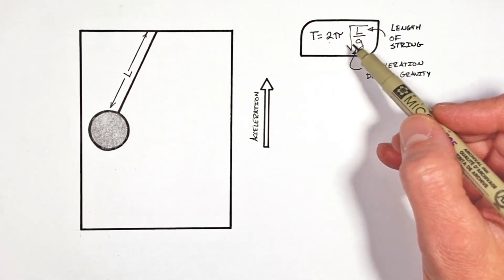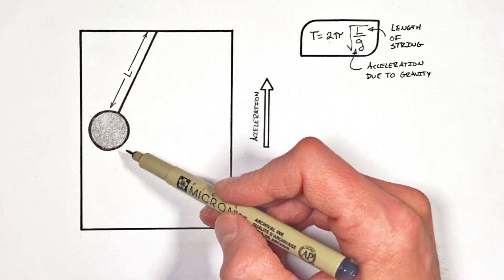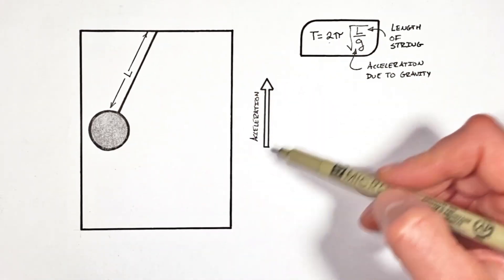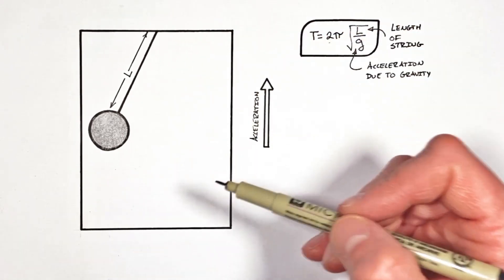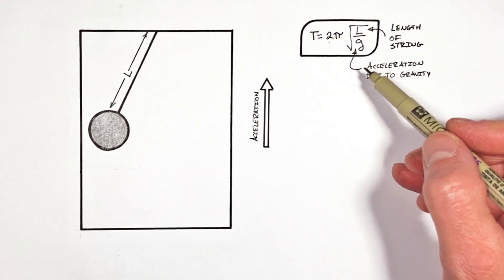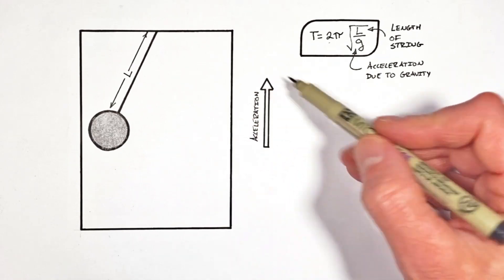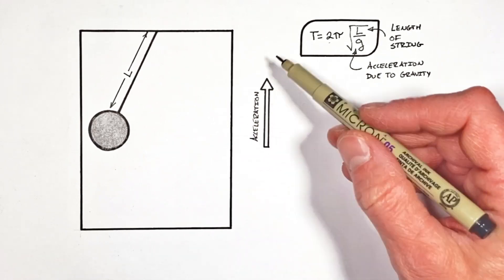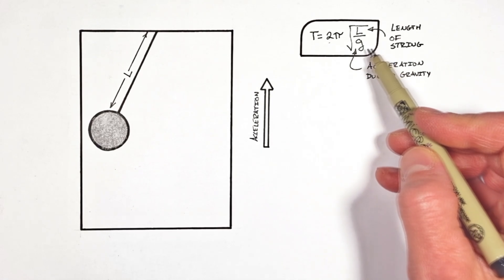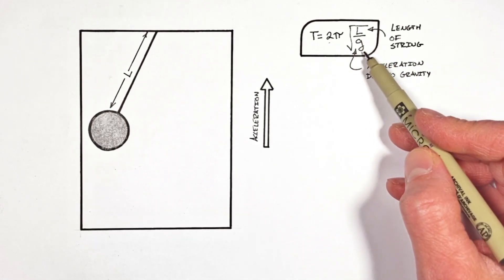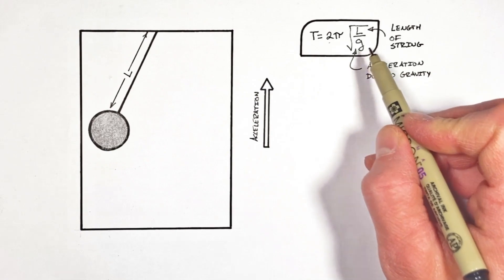Now realize, this period equation applies to our pendulum in the elevator so long as the elevator isn't accelerating. That is to say, if the elevator is moving up at a constant speed or is stationary, this equation is still going to apply. But as soon as we allow this elevator to accelerate, either up or down, we need to make some changes to this equation. And more specifically, we need to make some changes to this acceleration due to gravity term.